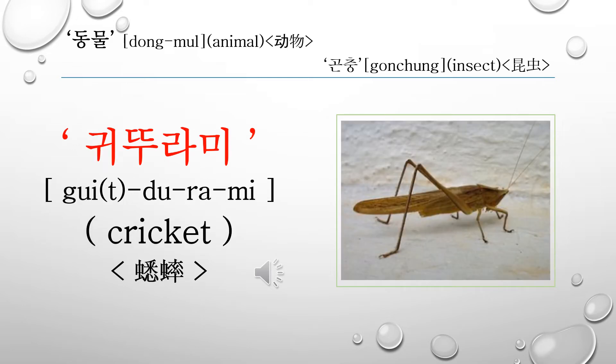This word is 귀뚜라미. 귀뚜라미 is called a cricket in English, and it is called 蟋蟀 in Chinese. Let's read it again: 귀뚜라미, 귀뚜라미.